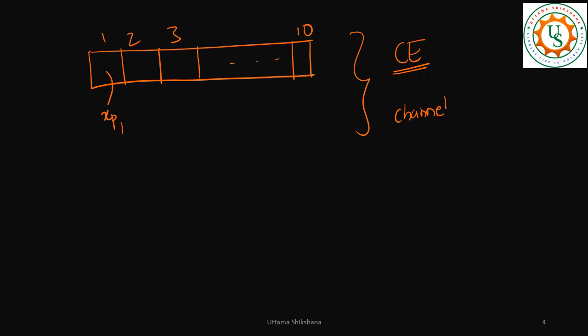Here I have transmitted my pilot xp1. Now whenever we do channel estimation, we assume something - that is the channel is constant for a certain duration, here I can say 10 symbols for now.